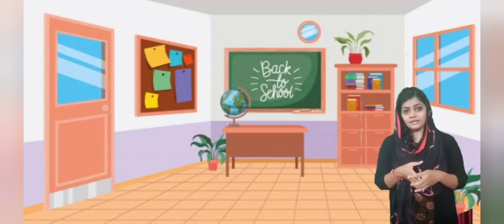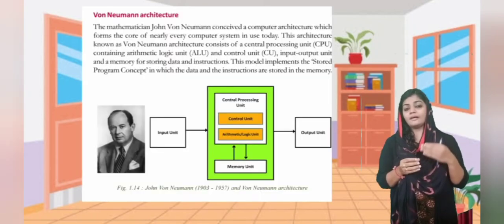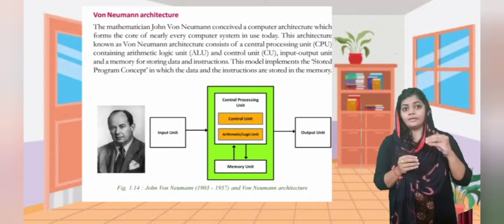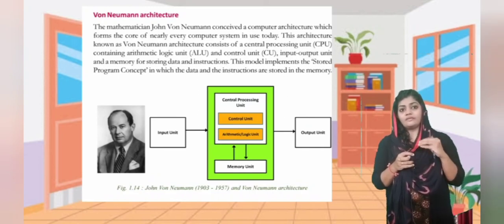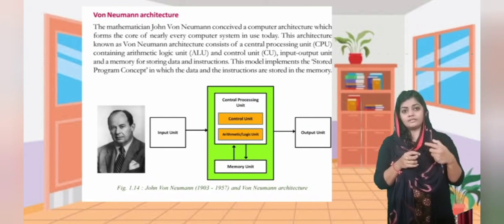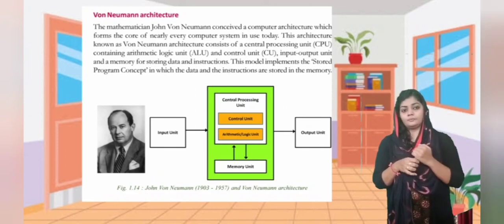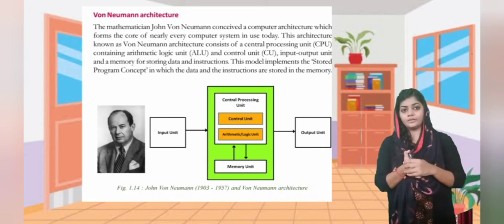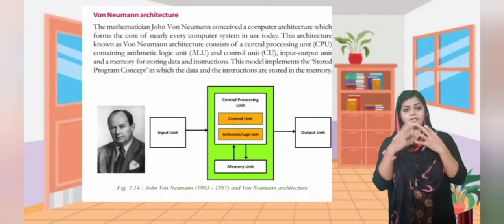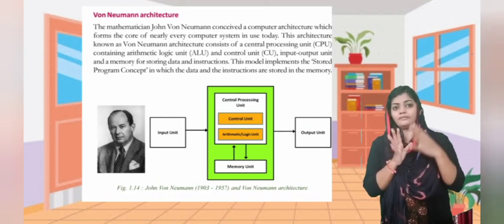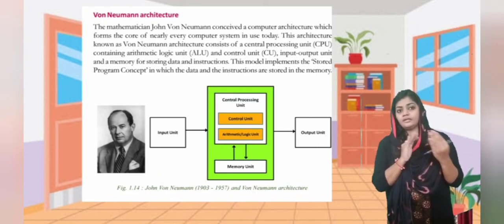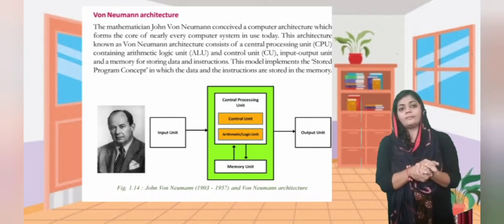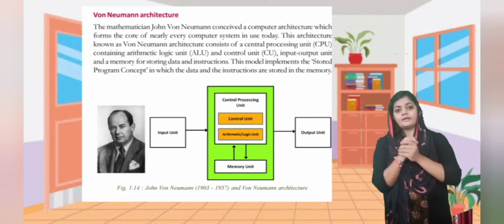Before ENIAC was completed, von Neumann designed the Electronic Discrete Variable Automatic Computer — EDVAC — with a memory to hold both the stored program as well as data. Eckert and Mauchly later developed the first commercially successful computer, the Universal Automatic Computer — UNIVAC — in 1952.